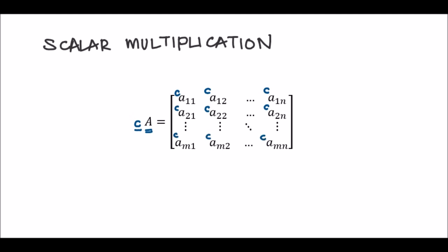So example would be, let's say that number C is maybe a number 7. Yeah, 7 times the matrix A. So what you need to do is just multiply every element with that number 7, and so on and so forth.